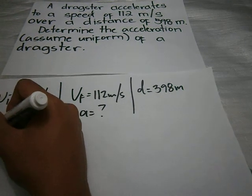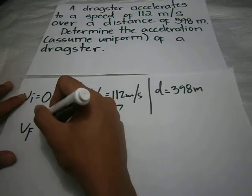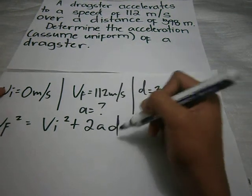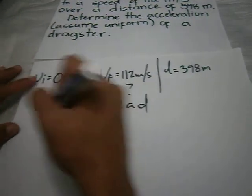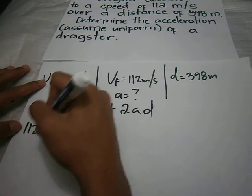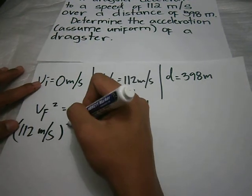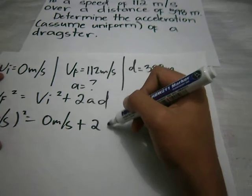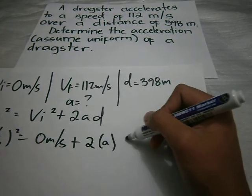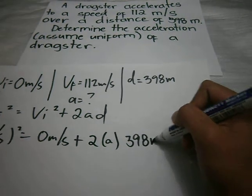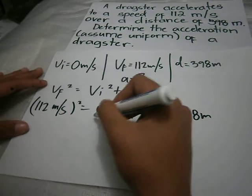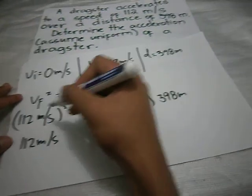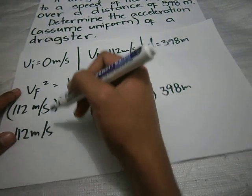We will use the formula: final velocity squared equals initial velocity squared plus 2 times a times d. Substituting: 112 meters per second squared equals initial velocity 0 meters per second squared plus 2 times a times 398 meters. 112 meters per second squared is equal to...